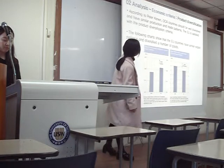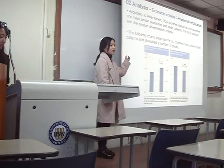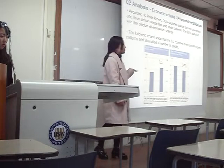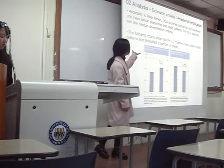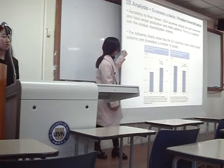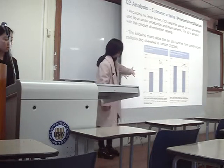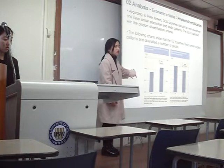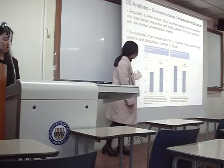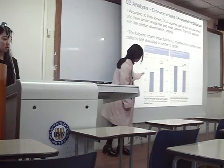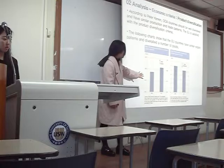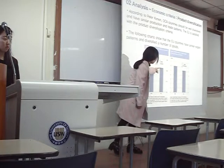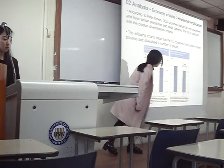The second economic criterion is product diversification. According to Peter Kenen, countries should be well diversified and have similar production and trade patterns. The charts show that EU countries have similar export patterns and diversified goods. The standard is not specified, but both indices are over half, so I think euro countries have greater similarity and greater diversification.